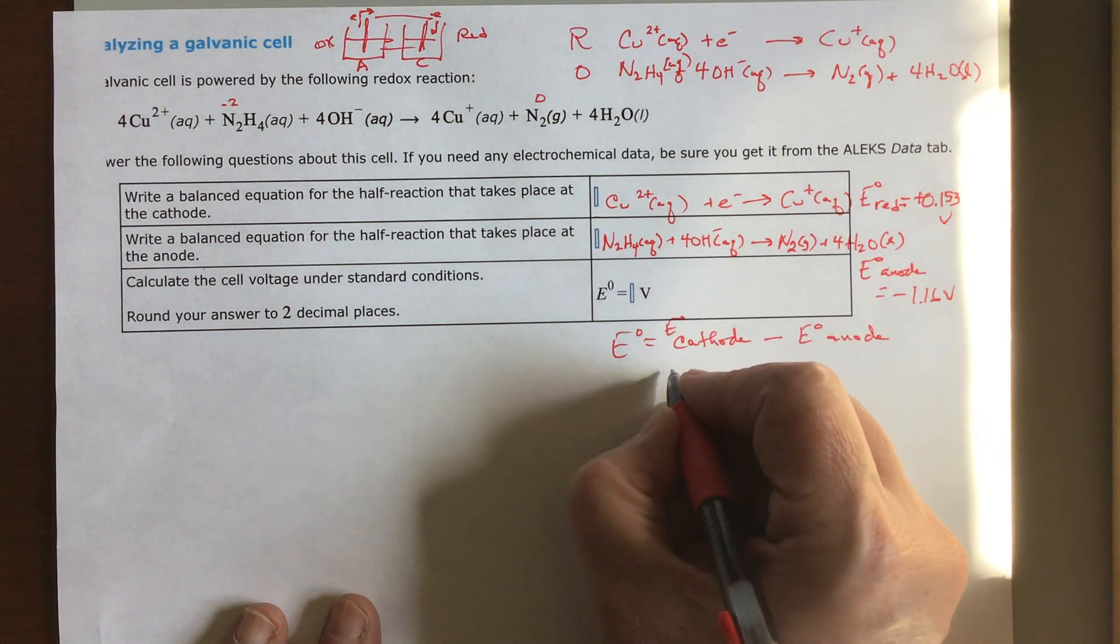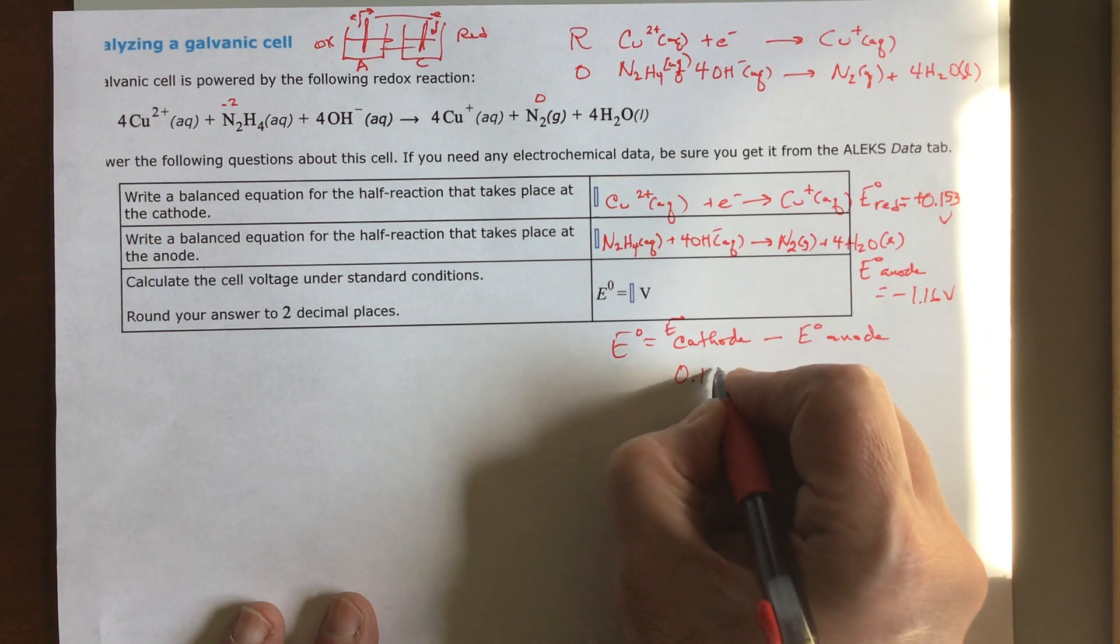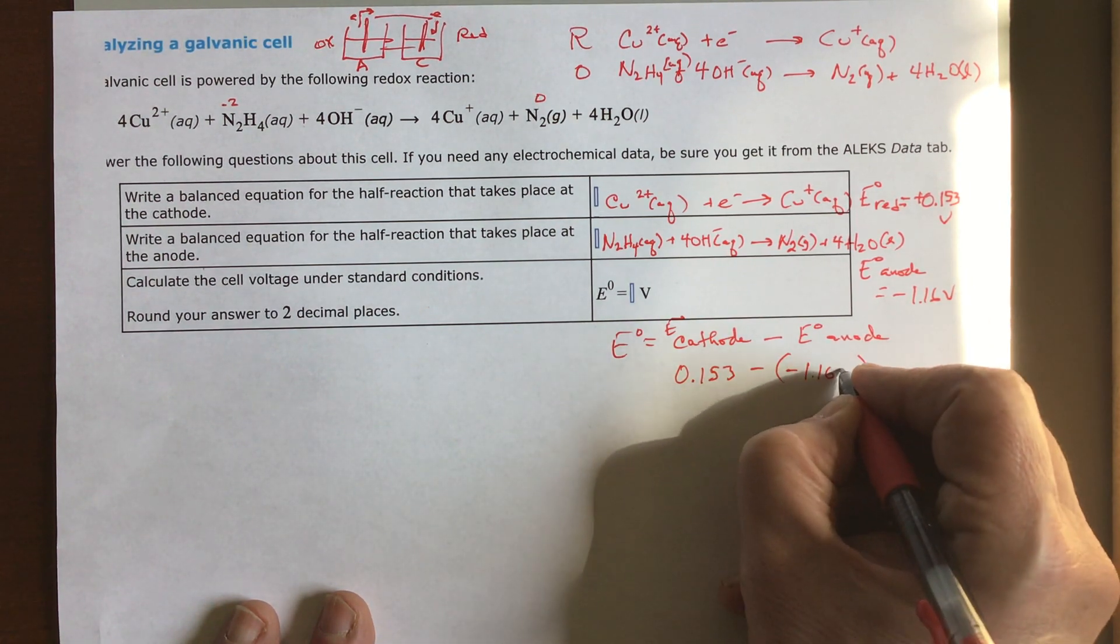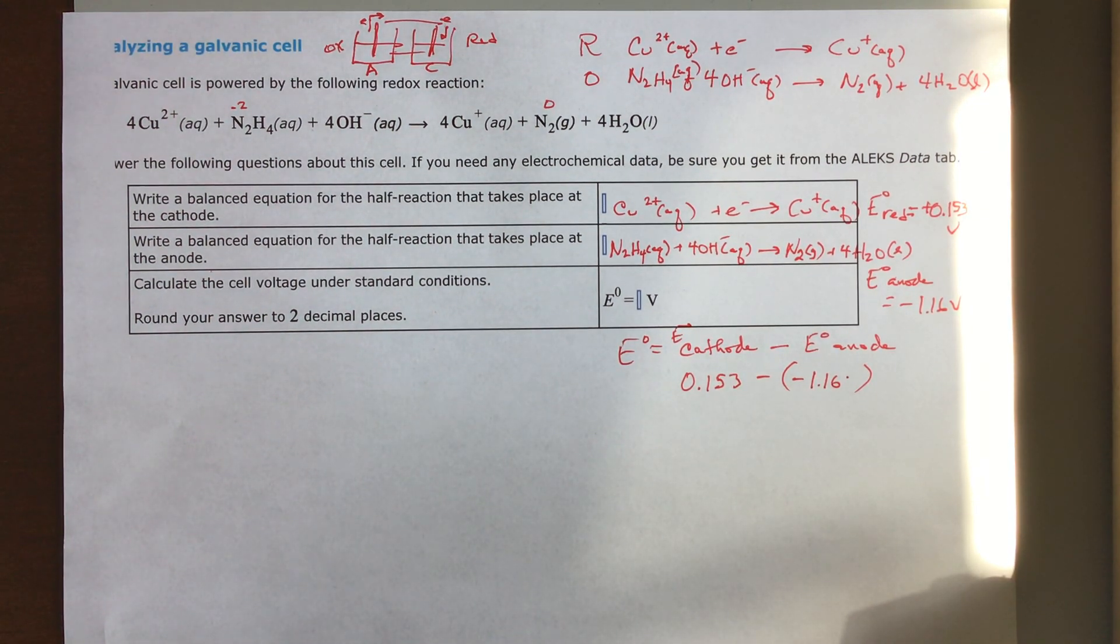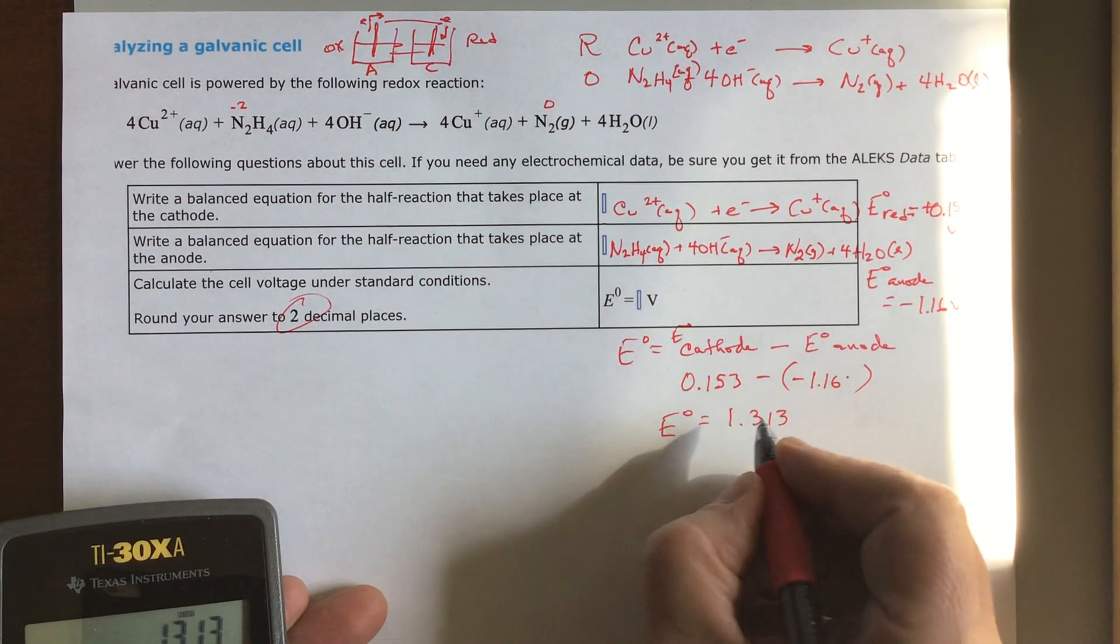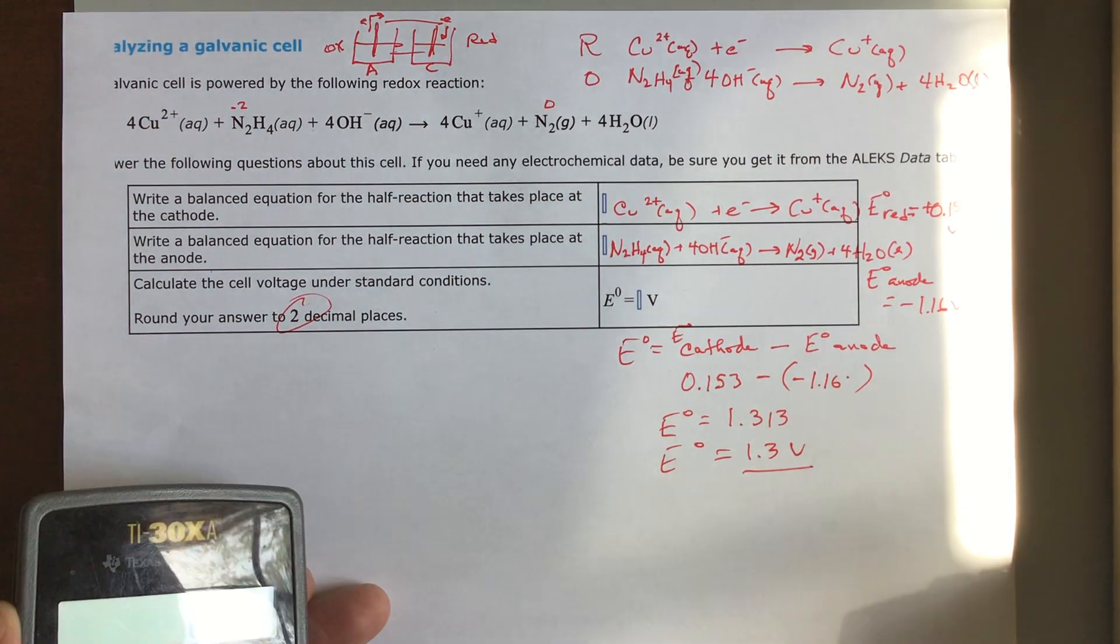Now, cathode is the first one. So we're going to say positive 0.153 minus negative 1.16 volts. So 0.153 minus a minus, which is plus 1.16, gives you E° equals 1.313. We want two decimal places, so that equals 1.31 volts.